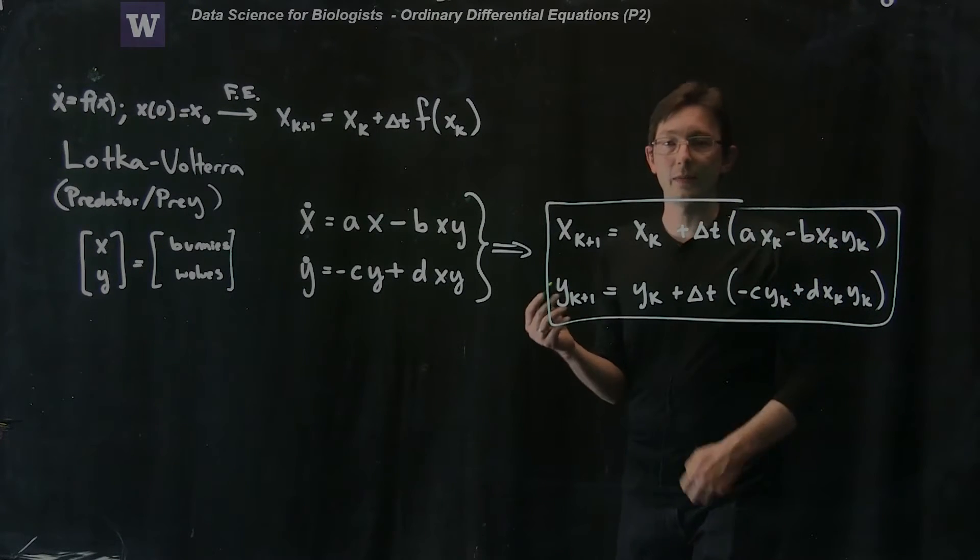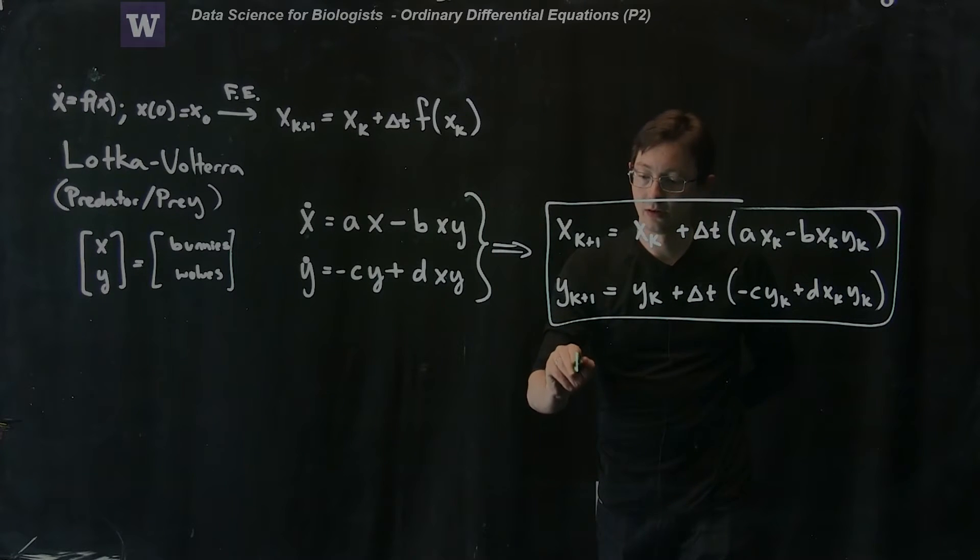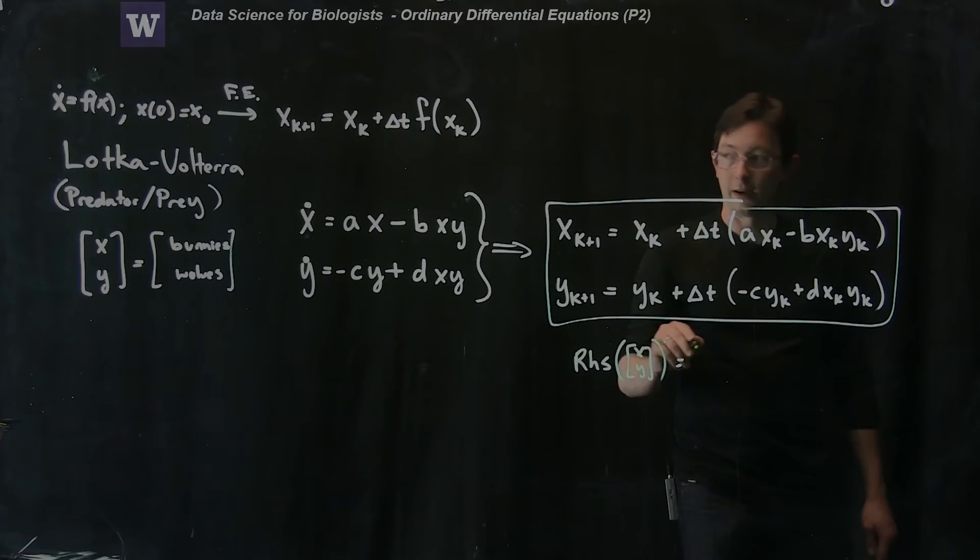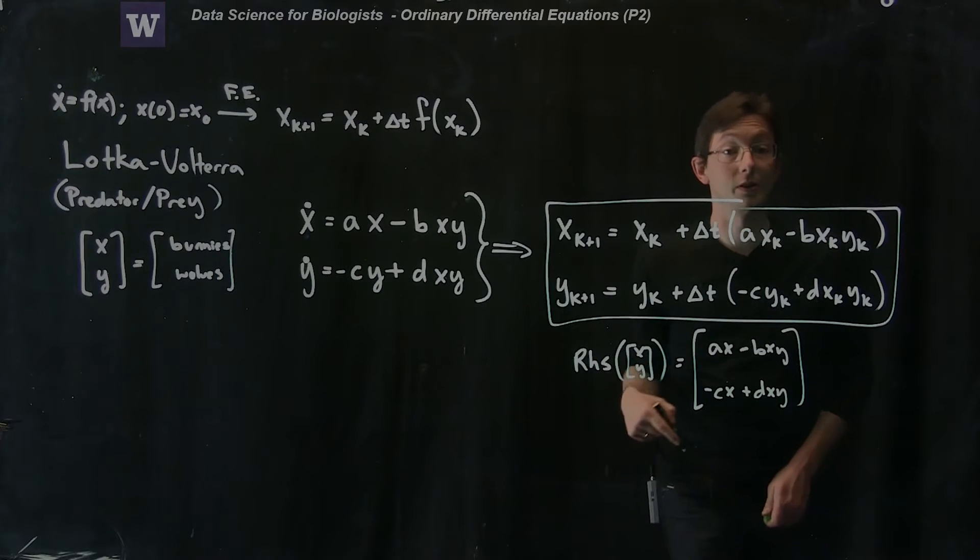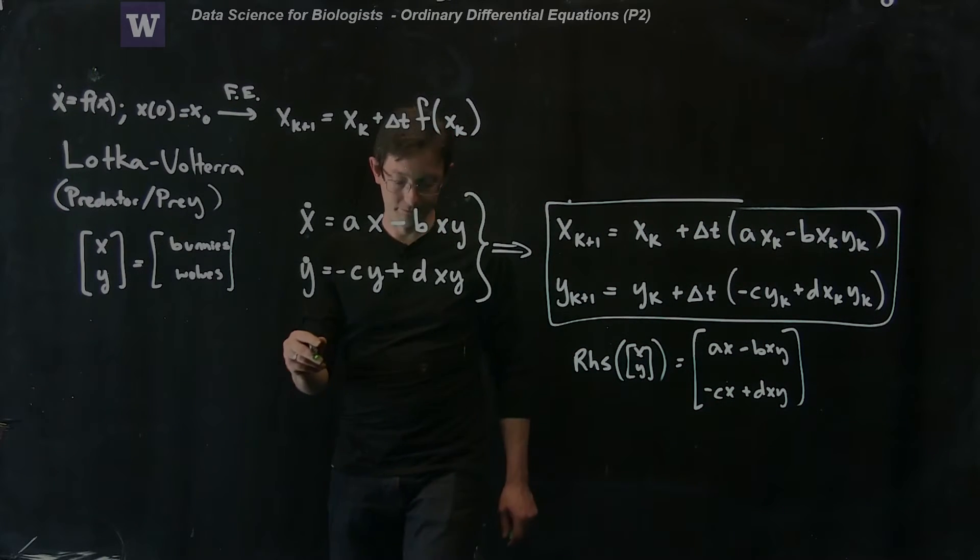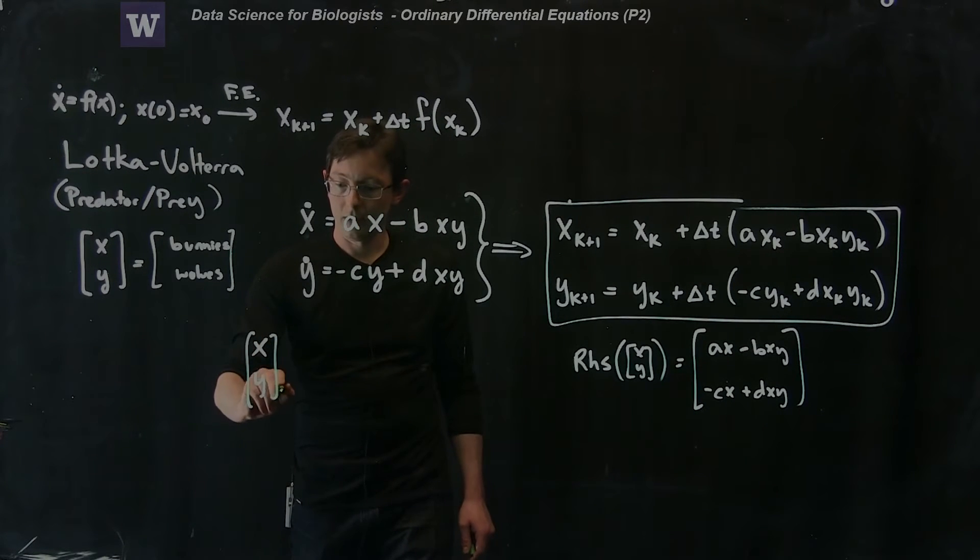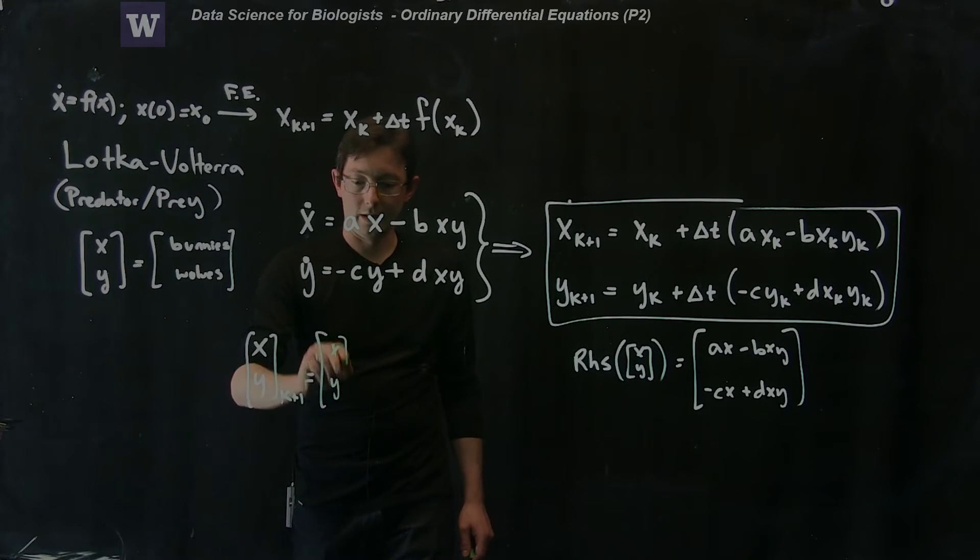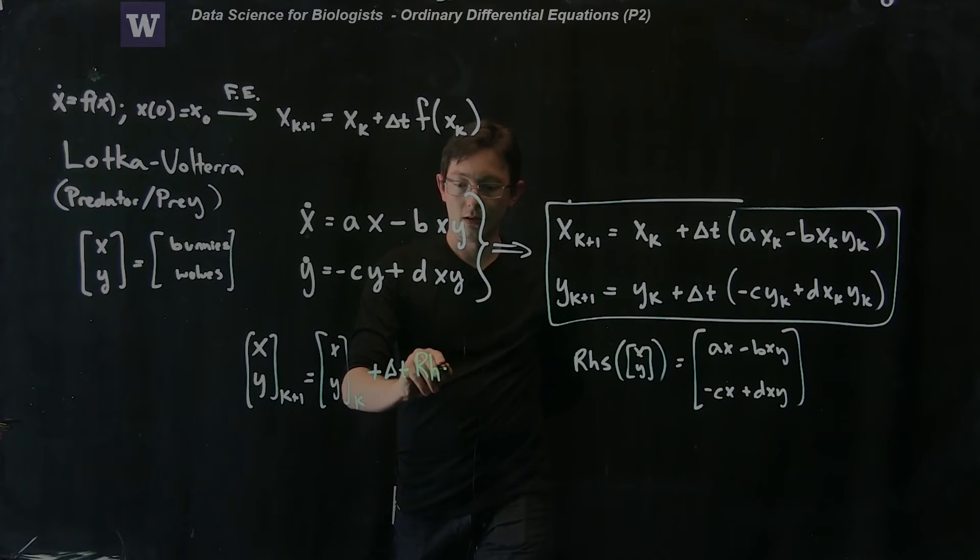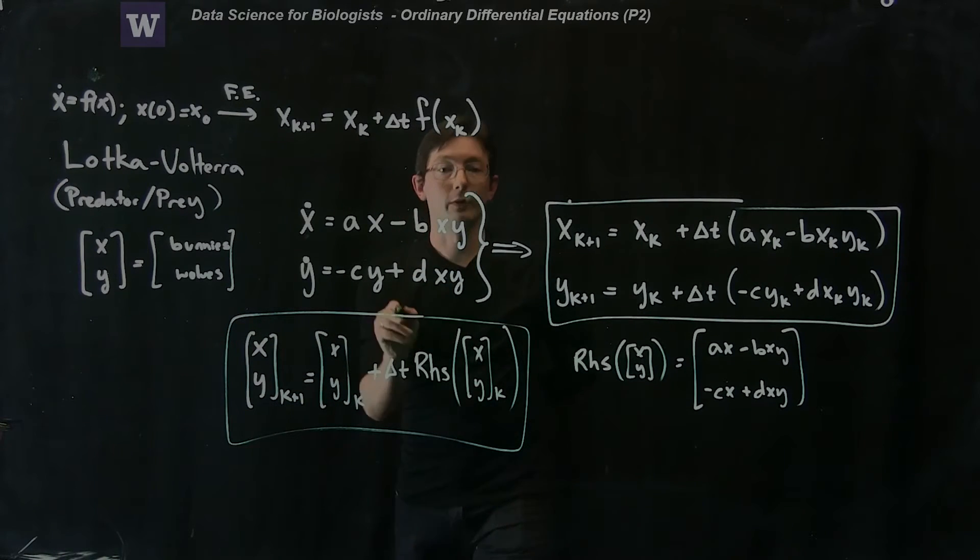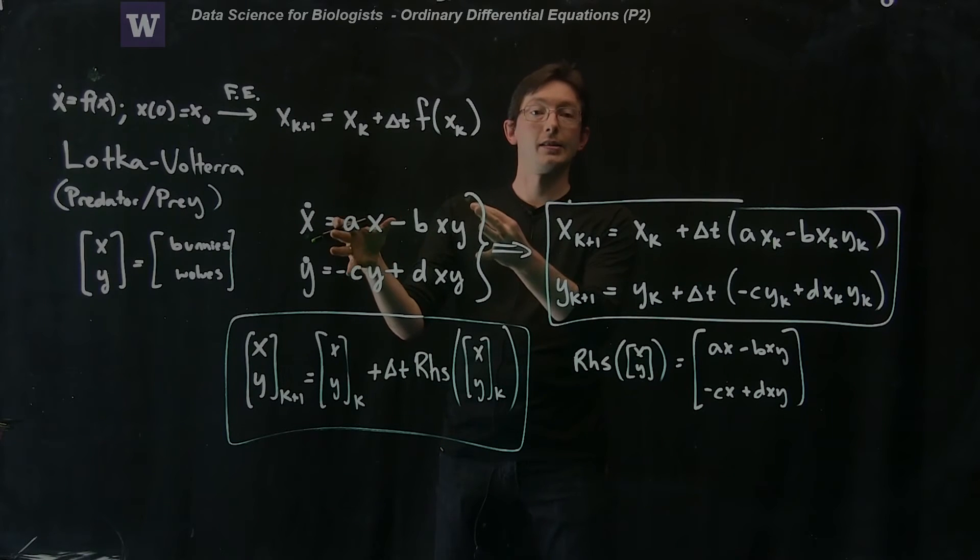If I wanted to be a little bit more fancy about writing this, I would just develop some right-hand side function. The right-hand side of my vector of x and y would equal this right-hand side vector. It would equal a vector of ax minus bxy and minus cx plus dxy. That's what this right-hand side function would be. And I would just say that x and y at time k plus 1 equals x and y at time k plus delta t times my right-hand side function evaluated at x and y at time k. This is just another way of writing it in terms of some right-hand side function.